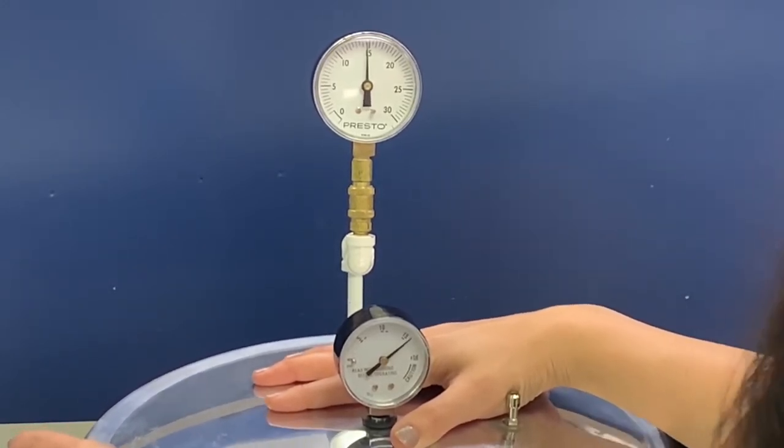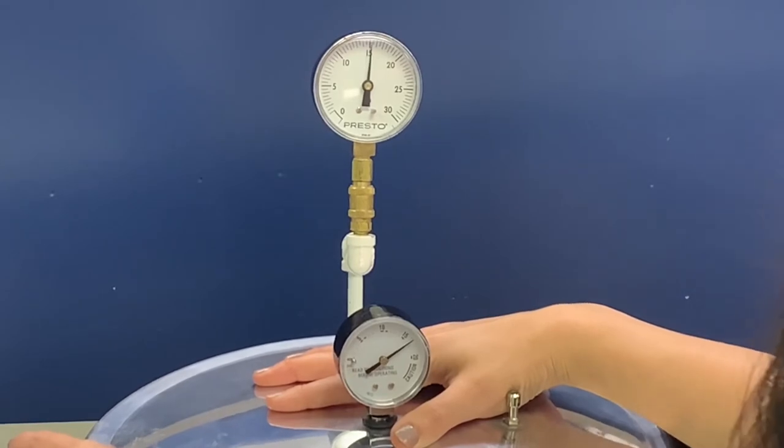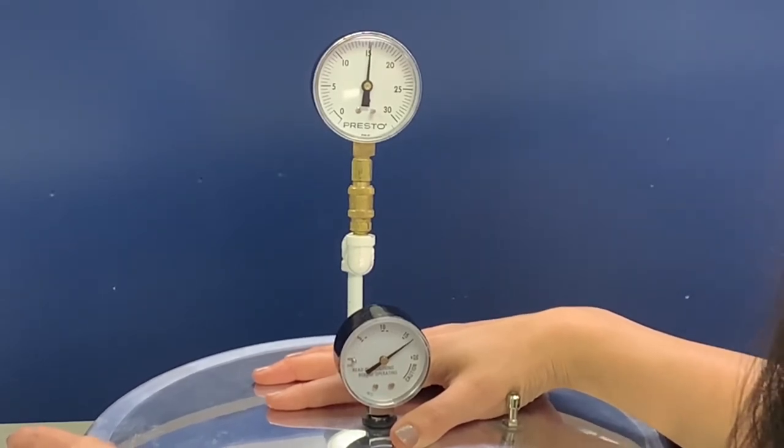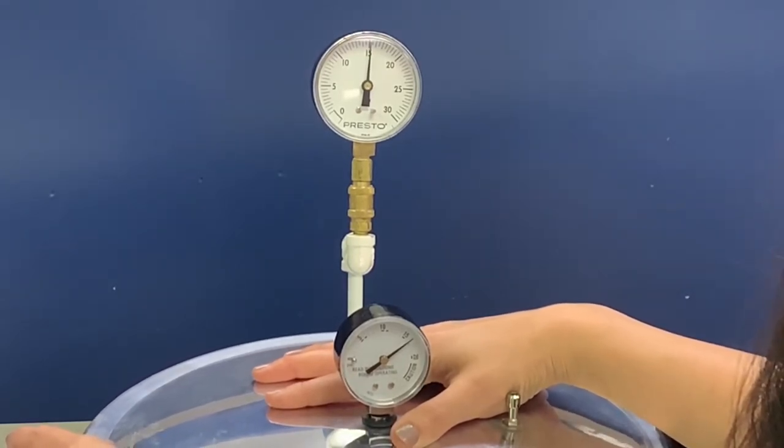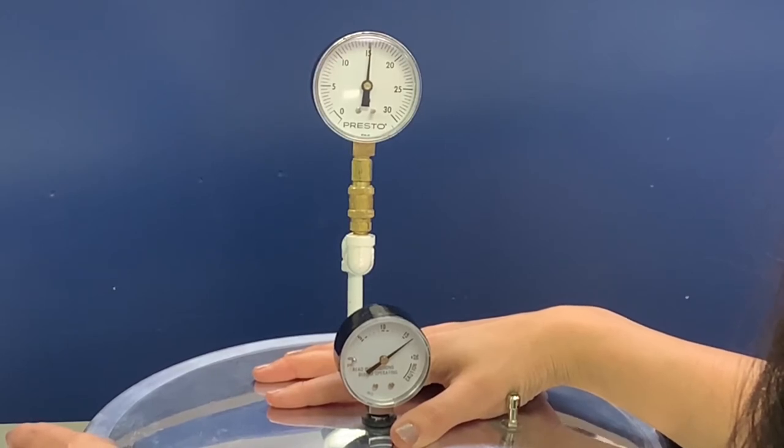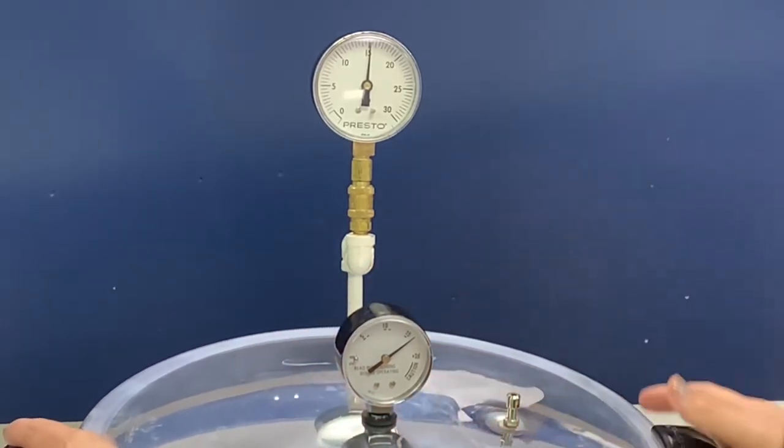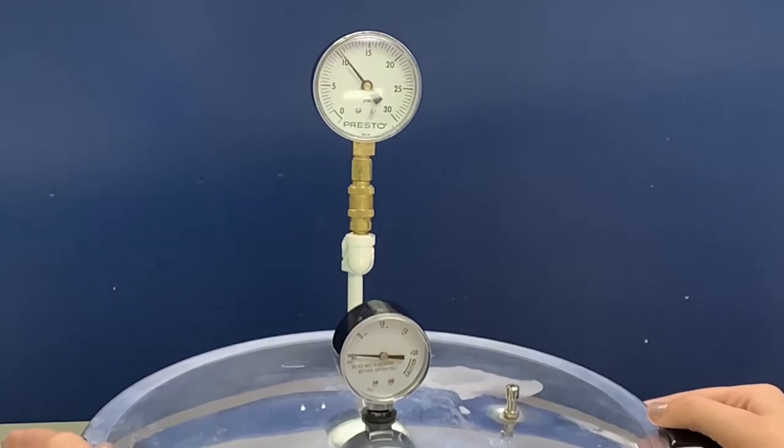Oh no, it looks like our gauge is over 15 pounds. If your gauge is off by 1 pound at 5, 10, or 15, it's still okay to use. Just make the adjustments when you're canning. If your gauge is off by 2 pounds, it's recommended that you buy a new gauge.